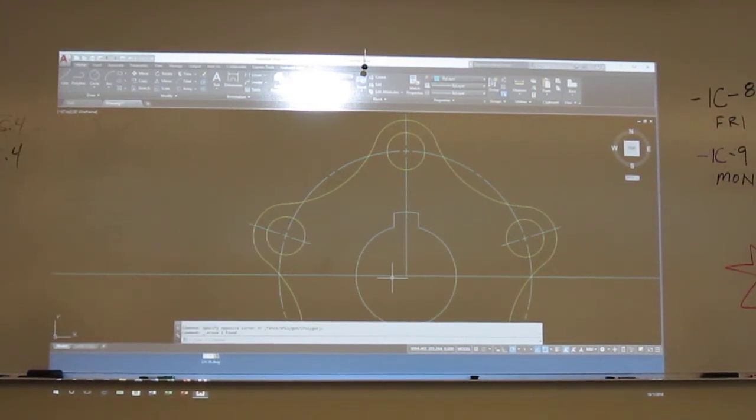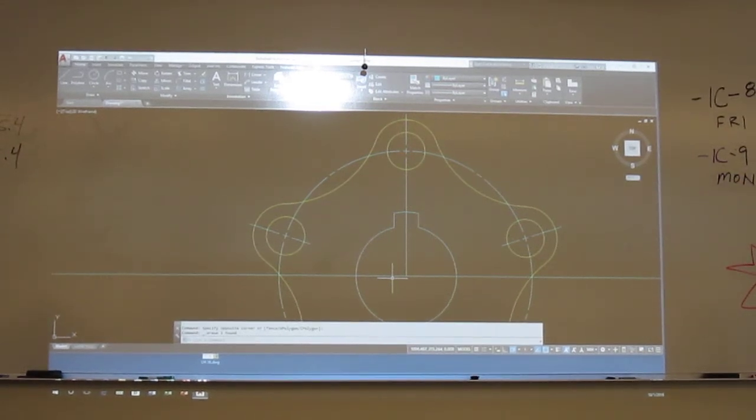And how many of these are there? 1, 2, 3, 4, 5, 6, 7, 8 of those. Let's do a polar array on just this piece.